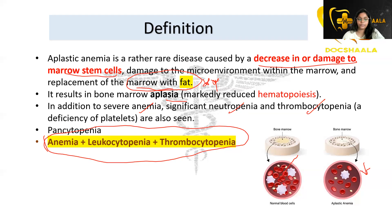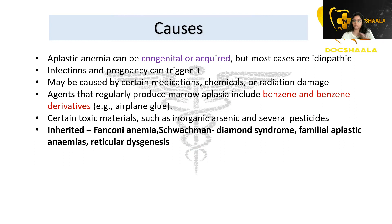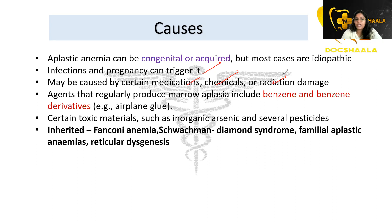Coming to the causes, aplastic anemia can be congenital or acquired. The main cause is idiopathic in most cases. Infections and pregnancy can also trigger it, and it may be caused by certain medications, chemical exposure, or radiation damage — agents that regularly produce marrow aplasia.